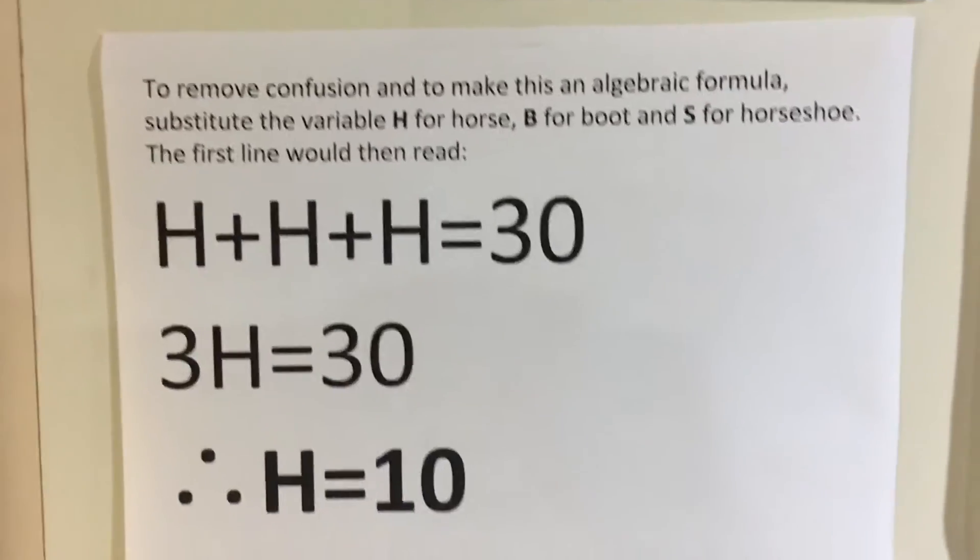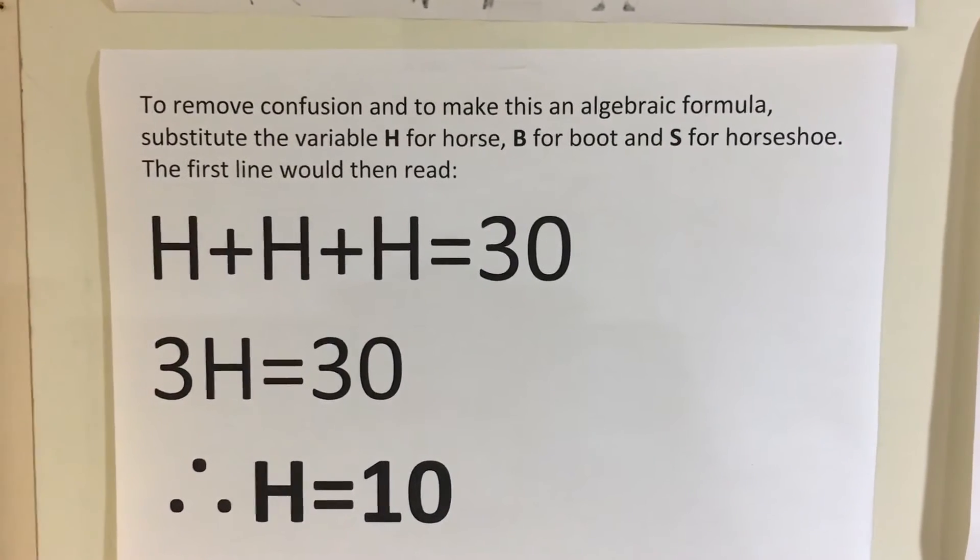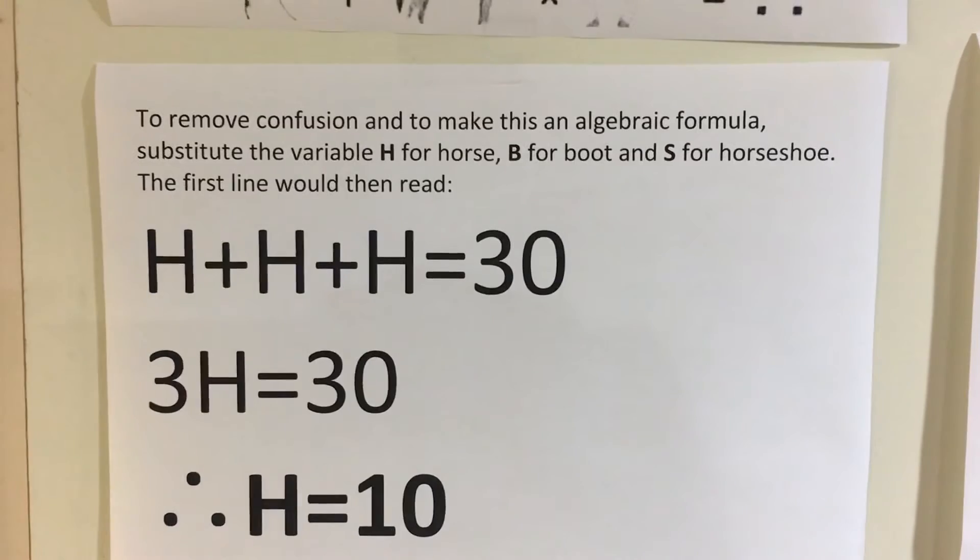We're going to substitute some variables: H for horse, B for boot, and S for horseshoe. The first line is going to read H plus H plus H.